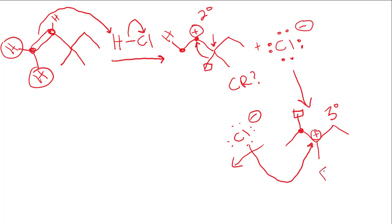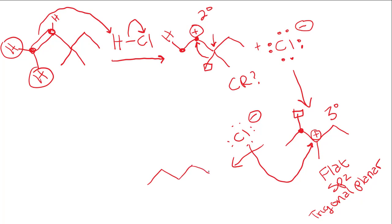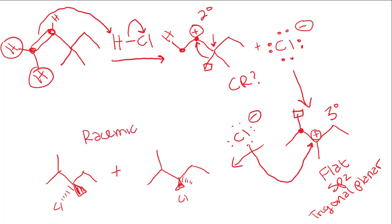Remember, a carbocation is flat, sp2 hybridized, and its geometry is trigonal planar — it's like a piece of paper that can be attacked from the front face or from the back face. So when this carbocation gets attacked, the chlorine 50% of the time is going to add on a wedge, and the other 50% of the time it will add on a dash. What we have is a 50-50 mixture of the R and S enantiomers. This is known as a racemic mixture — when you have 50% R and 50% S. You just have to recognize that you get a mixture of both enantiomers.